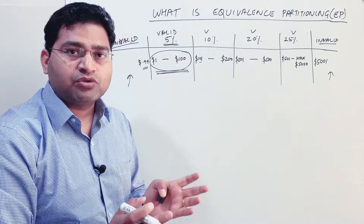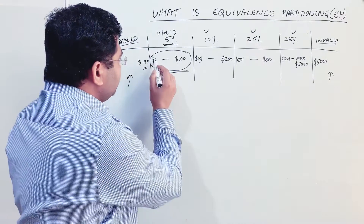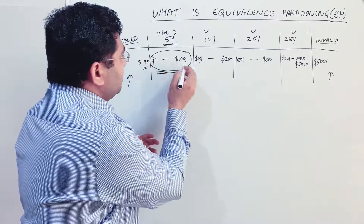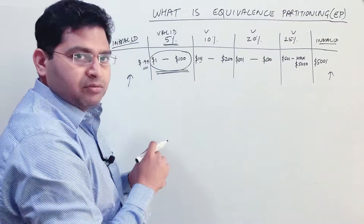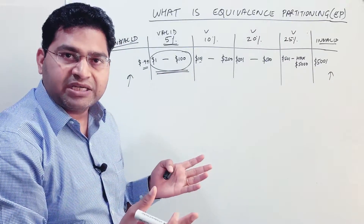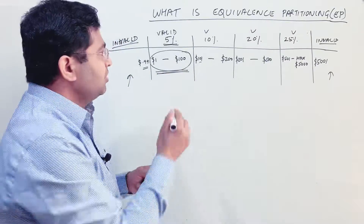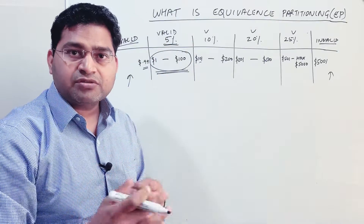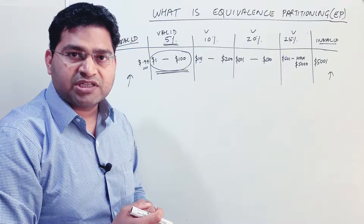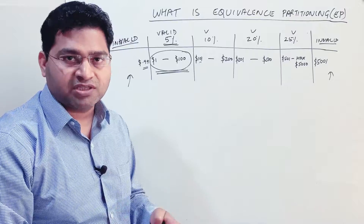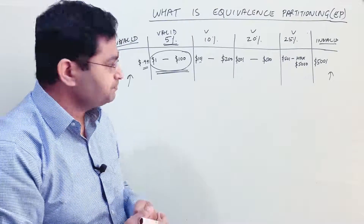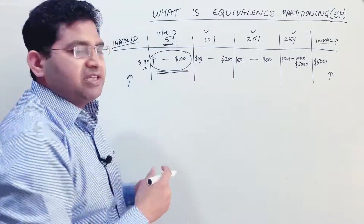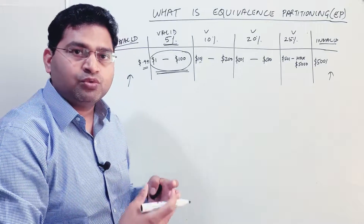You can't keep testing every purchase value from $1 to $100 — that would be 100 test cases just to test the 5% discount tier alone. We've understood from software testing principles that exhaustive testing is not possible, and that is why equivalence partitioning is the technique to come up with a minimal number of test cases.